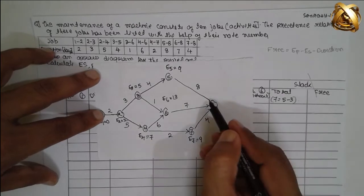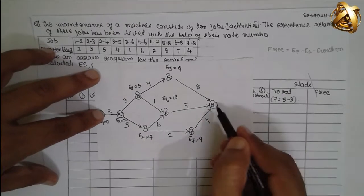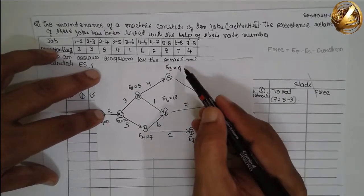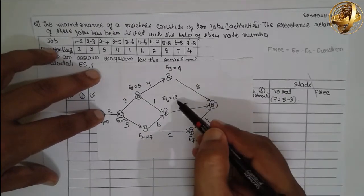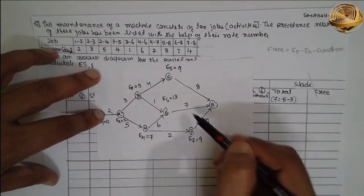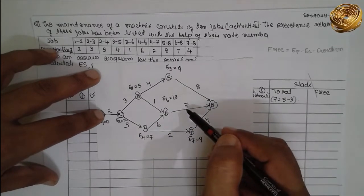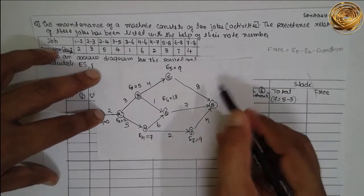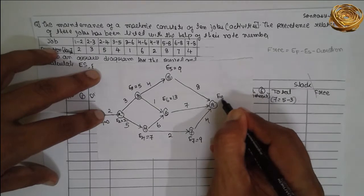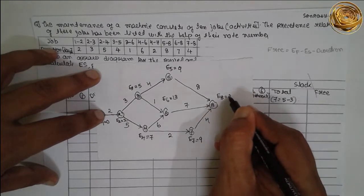At this junction we also select the larger value. We have 9, 13, and 9 — we select 13. Thirteen plus 7: E8 is equal to 20.